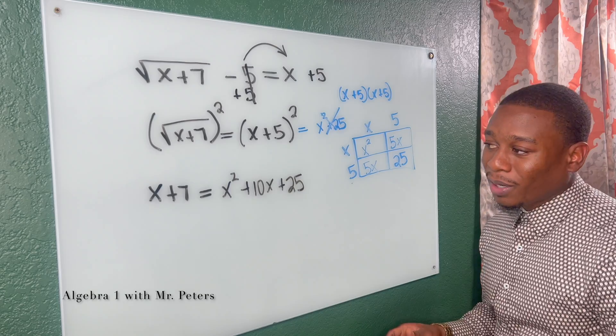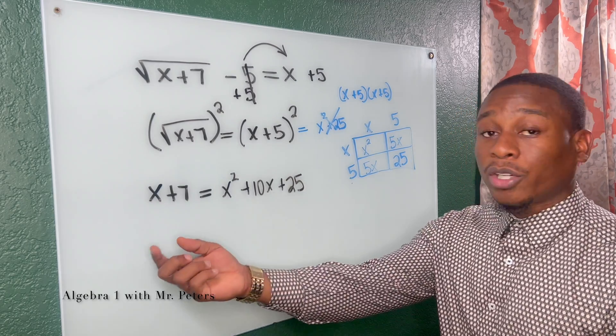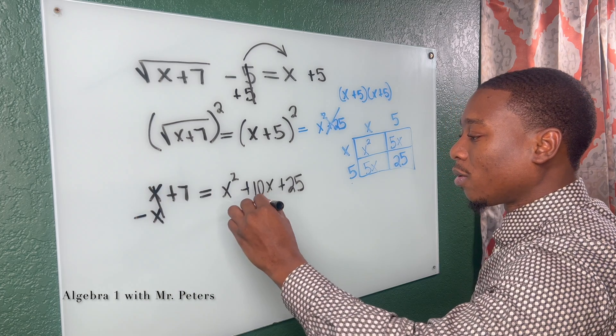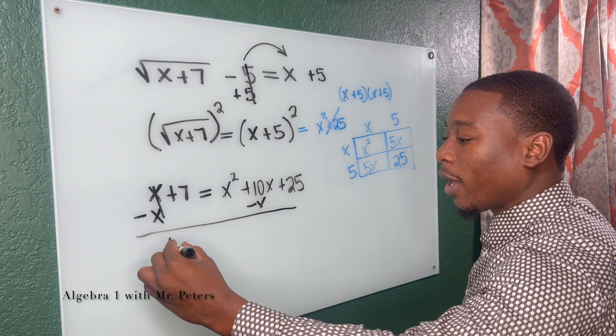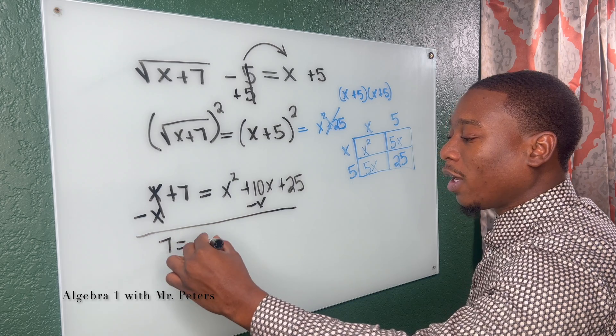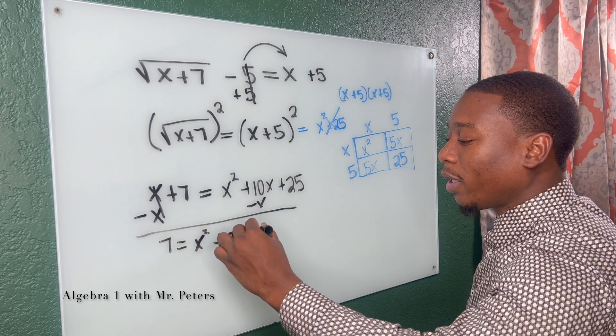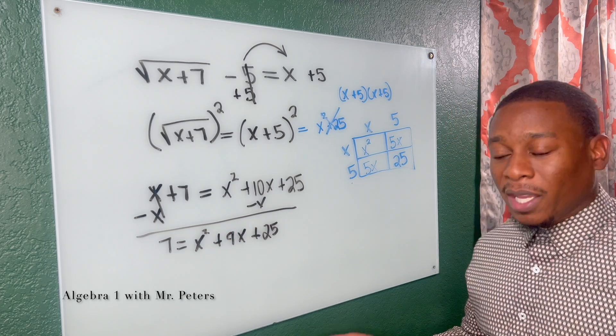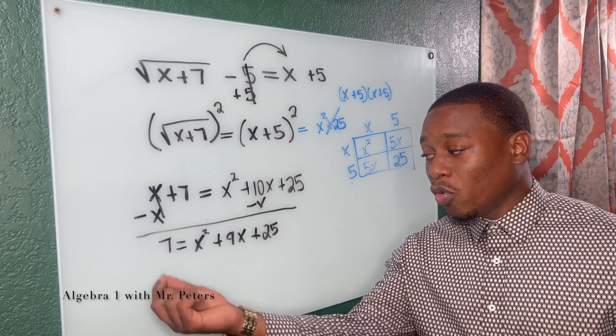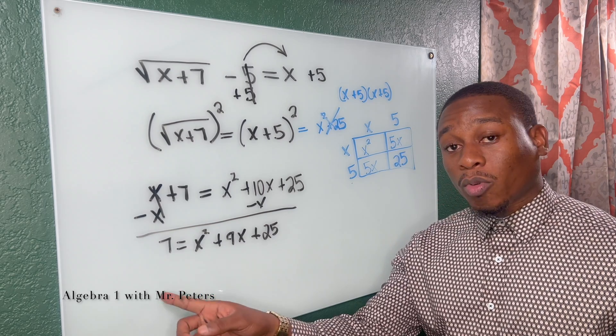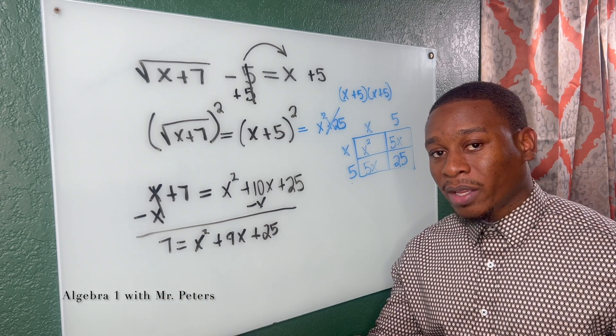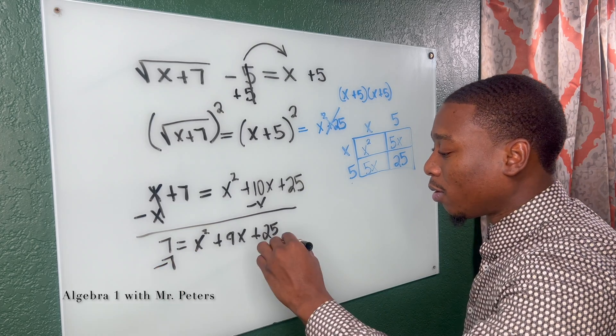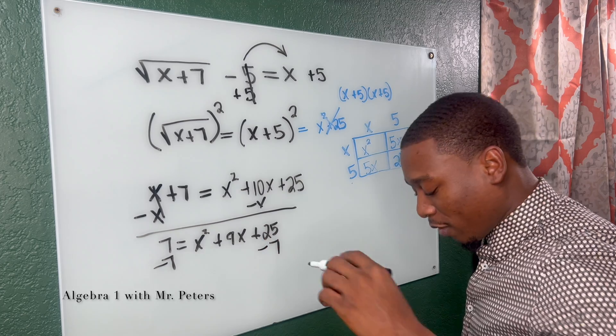Now at this step, guys, we have to combine our like terms. So let's do the X first. I subtract X. I'm going to have seven is equal to X squared plus nine X plus 25. Now I'm going to do the same thing, but we have to understand when we move seven over, zero is what is left. That equation, that equal sign doesn't just disappear. So I subtract seven, subtract seven from 25.